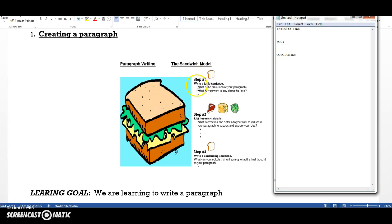As you can see here, in the introduction you should write a topic sentence. What is the main idea of your paragraph? So, for example, my topic is squirrels and I will write about what they eat.